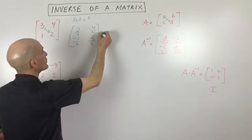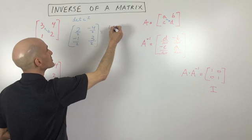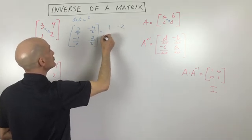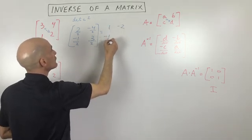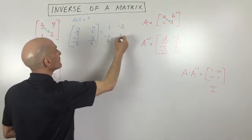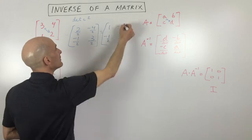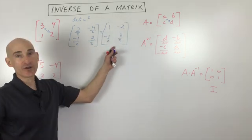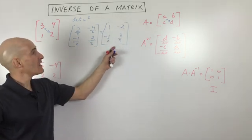I'll simplify it a little bit further. So it's one, negative two, negative one half, and three halves. And so this is our inverse matrix.